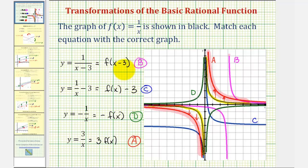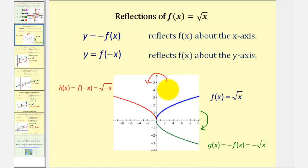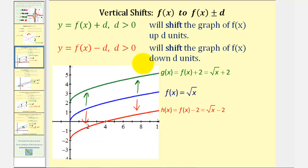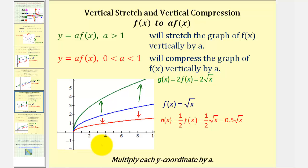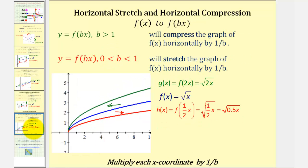With practice, if we're given a basic function and a variation of it, we should be able to recognize the type of transformation that has occurred. Here is a quick review: reflections across the x and y-axis, vertical shifts up or down, horizontal shifts left or right, vertical stretches or compressions, and horizontal stretches and horizontal compressions. I hope you found this helpful.